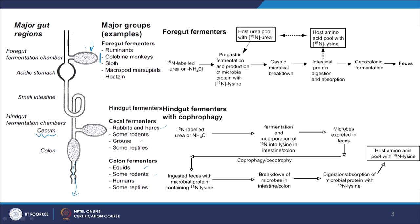For foregut fermenters, the foregut is microbe-rich because that is where fermentation occurs. After the microbes have fermented the food, they take the daughter products, and there is a lot of microbial growth because this is a nutrient-rich environment. When the fermented food goes to the acidic stomach, it carries some microbial biomass with it. In the acidic stomach, the biomass gets acid-hydrolyzed, and thus the cow not only gets nutrients from the grass it ate, but also benefits from the microbial biomass that grew on the fermentation daughter products in the foregut chamber.